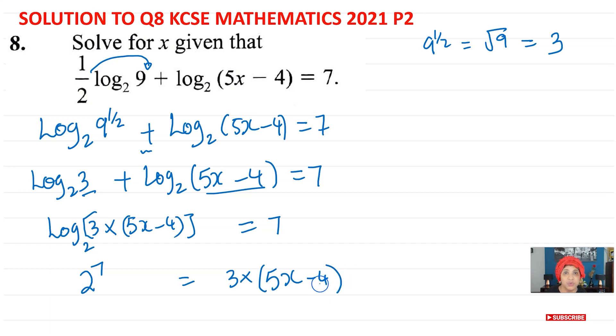And now what you have, 2 to the power of 7 is 128. And that's going to give you, we're going to expand this. So 3 times 5x is 15x. And then 3 times negative 4 is negative 12.